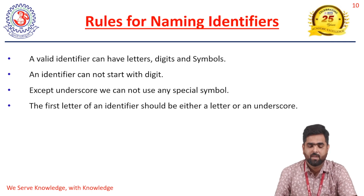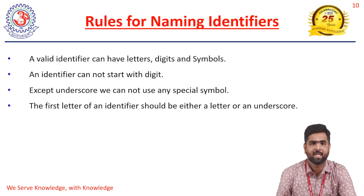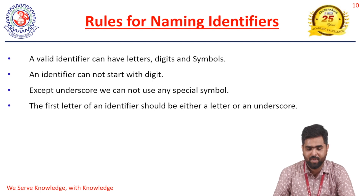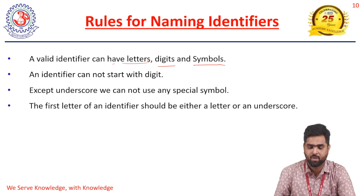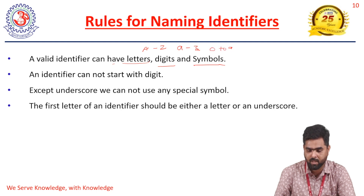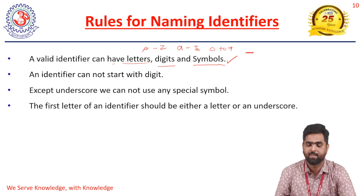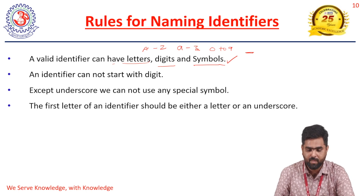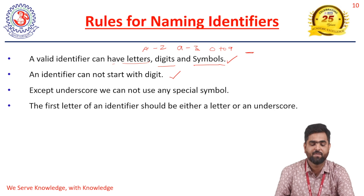Now we will discuss the rules for identifiers. A valid identifier may have a combination of letters, digits, and symbols. For letters, it may include A to Z and a to z. For digits, 0 to 9. For symbols, only the underscore is allowed — no other symbol can be used in identifiers.